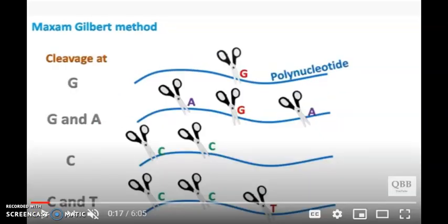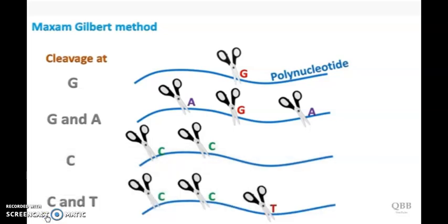So, let's see an animated version of the Maxam-Gilbert method. The first step of this method involves the radiolabeling of the DNA to be sequenced.